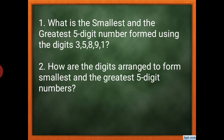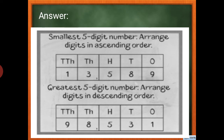Practice question: form the smallest and greatest five-digit numbers using the given digits. For the smallest five-digit number, arrange in ascending order: 1, 3, 5, 8, 9 — giving 13,589. For the greatest number, arrange in descending order: 9, 8, 5, 3, 1 — giving 98,531.